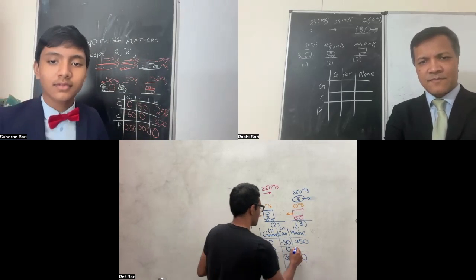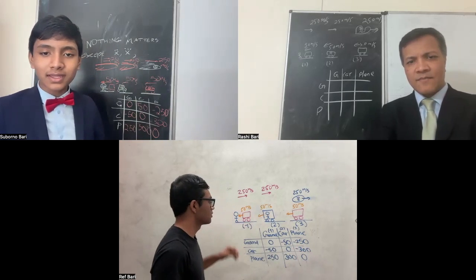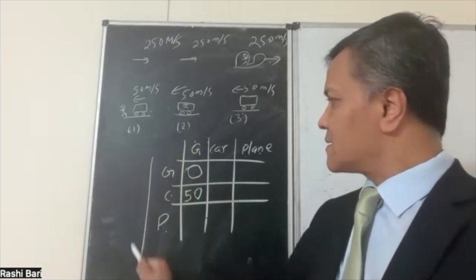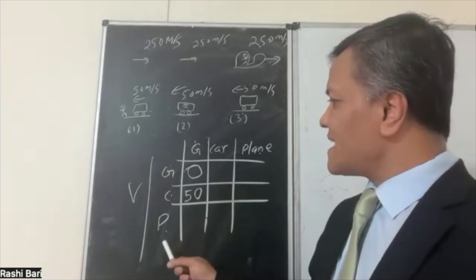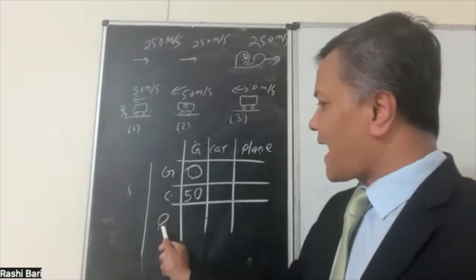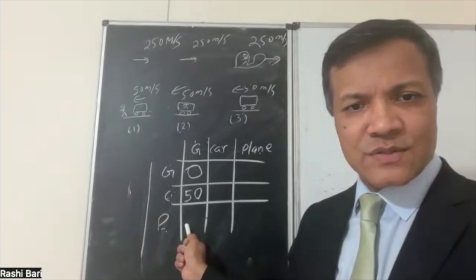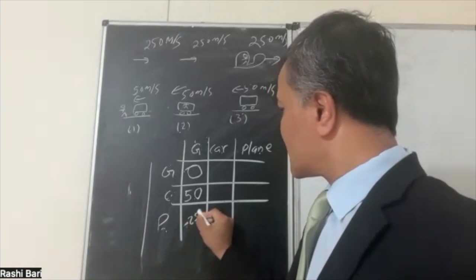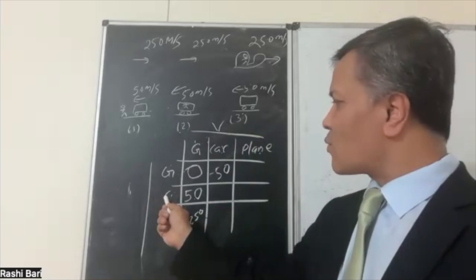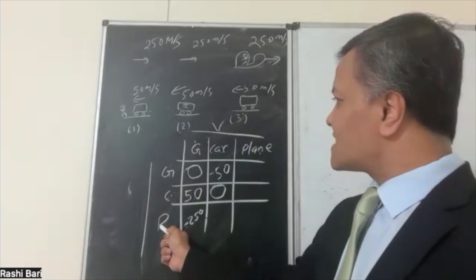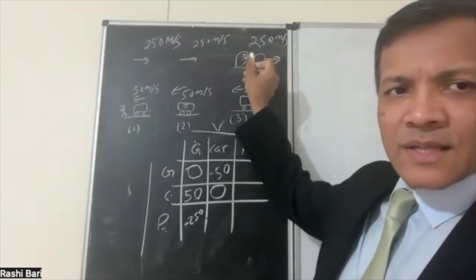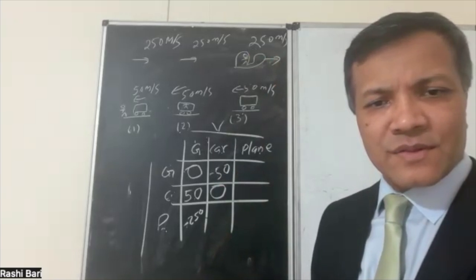When he is on the ground, the velocity of the ground is zero, the velocity of the car is negative 50. When he is in the car, the velocity of the ground is 50, the velocity of the car is zero. When he is in the plane, the velocity of the ground is negative 250, and the velocity of the car is negative 300, because negative 50 and negative 250 add up.